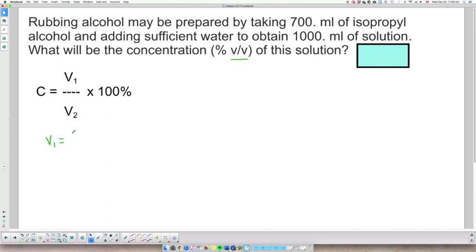V₁, volume of solute, that's the alcohol part. We have 700 mL of it. V₂, which is the final mixture, we have 1000 mL. And we're looking for the concentration expressed as a percentage.